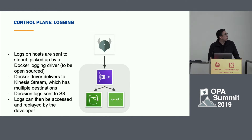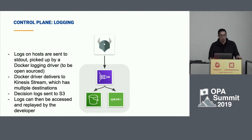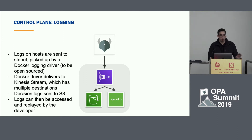Logging: OPA emits decision logs for the decisions that were made. However, we have our own logging infrastructure at Atlassian — it was previously FluentD, but we've replaced that with our own inbuilt logging driver for containers. All of that flows into AWS Kinesis Firehoses, which we then filter and branch out from.